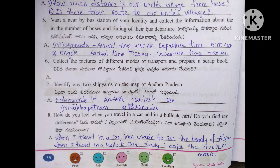Collect pictures of different modes of transport and prepare a scrapbook. Identify any two shipyards on the map of Andhra Pradesh. When I travel in a car fast, I am unable to see the beauty of nature. When I travel in a car slowly, I enjoy the beauty of nature.